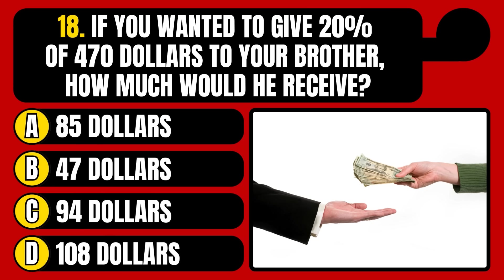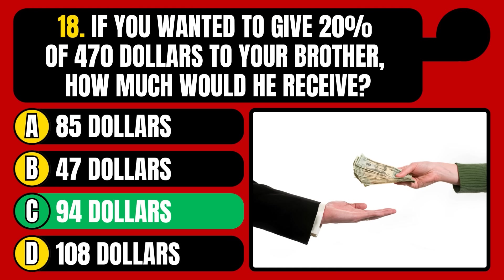If you wanted to give 20% of $470 to your brother, how much would you receive? $85, $47, $94, or $108? The correct answer is option C, $94.